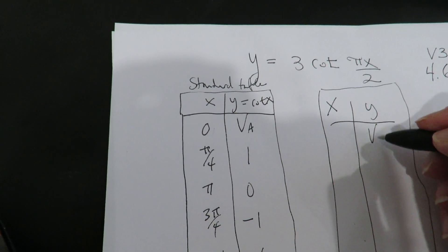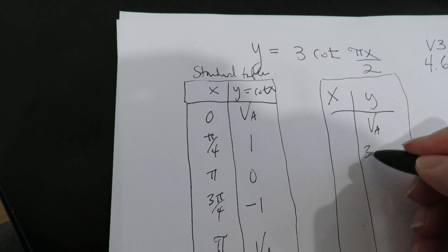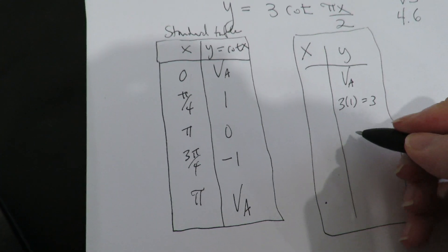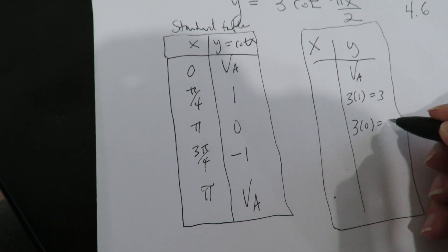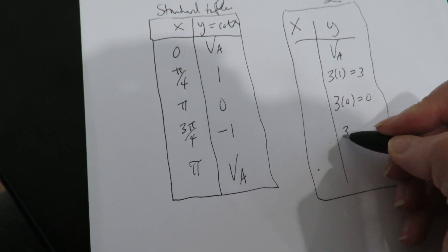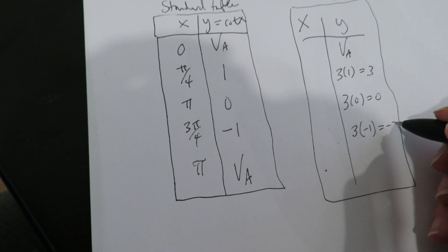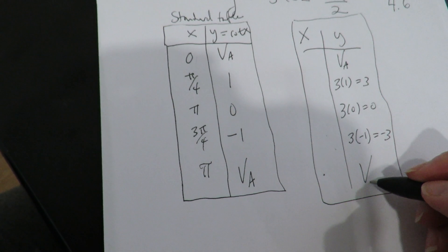VAs stay VAs, so you can just rewrite that. This will be 3 times 1 or 3. This will be 3 times 0 or 0. This will be 3 times negative 1 or negative 3 and this guy will be a VA.